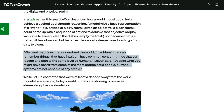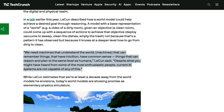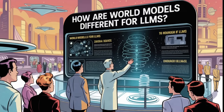He also added, hinting at a place we'll go in just a minute: 'Despite what you might have heard from some of the most enthusiastic people, current AI systems are not capable of any of this.' Which brings us to the next question: how do world models differ from pre-training or test-time compute-style approaches to scaling LLMs and achieving the next levels of advanced artificial intelligence — AGI, whatever you want to call it?